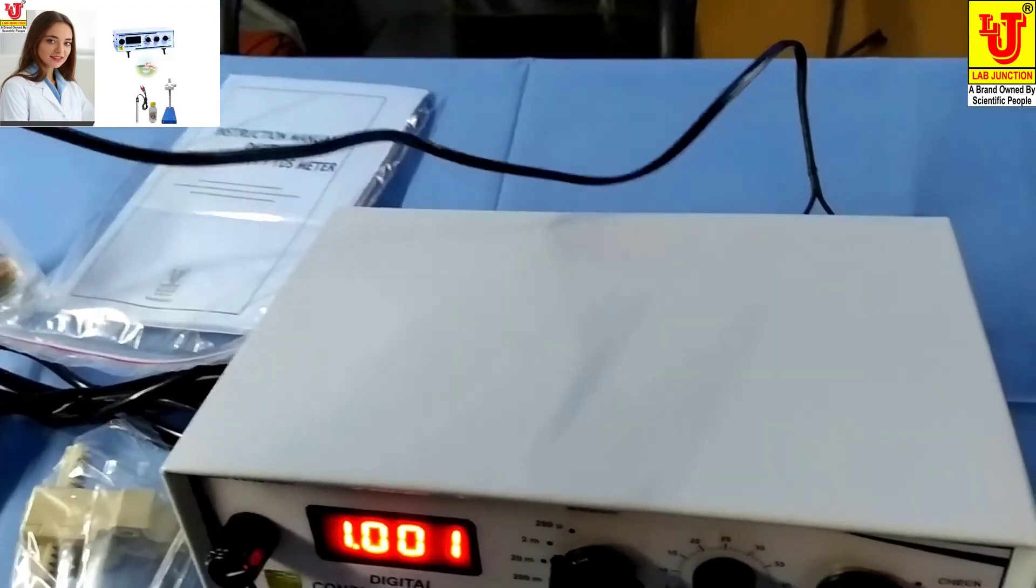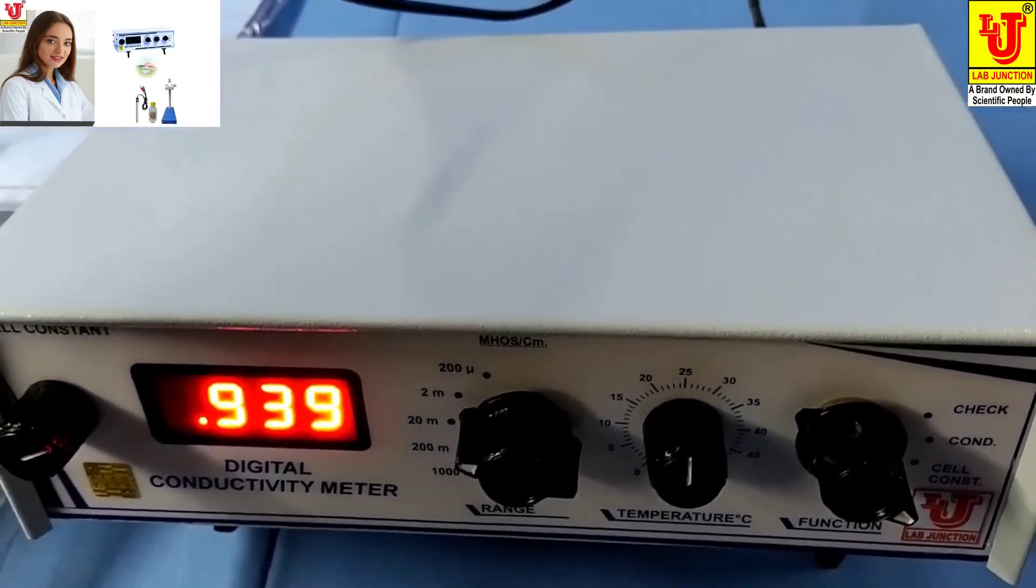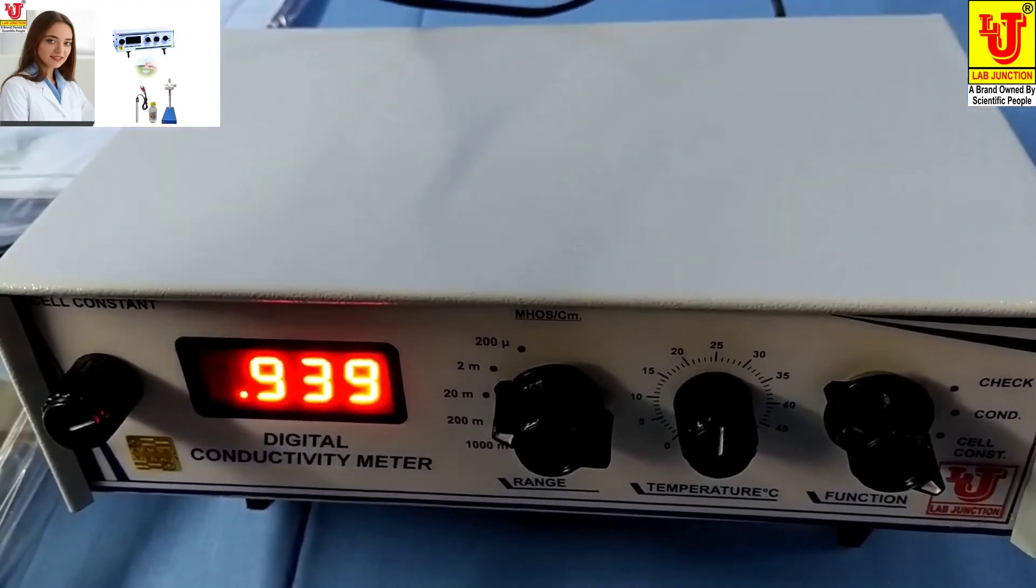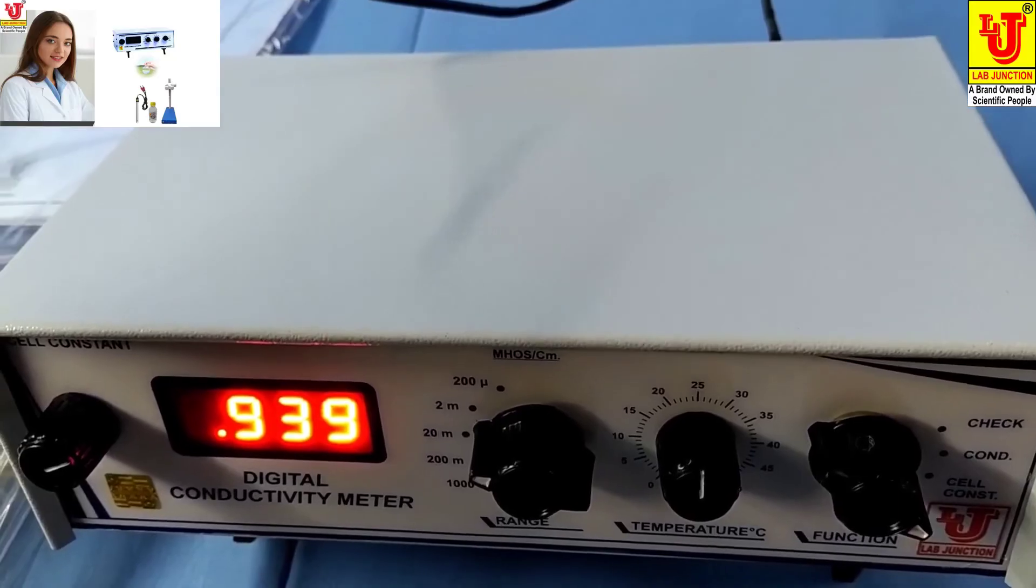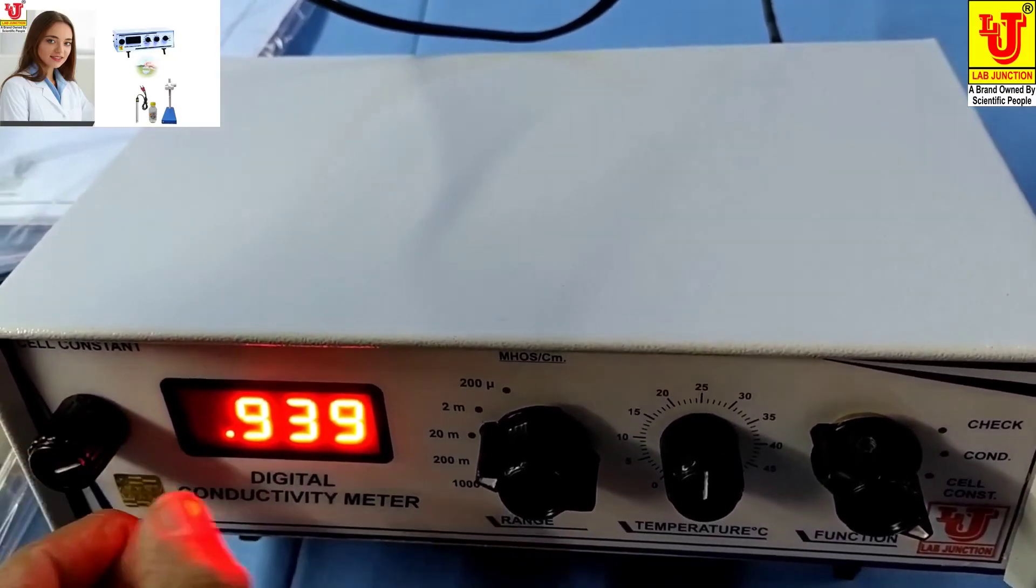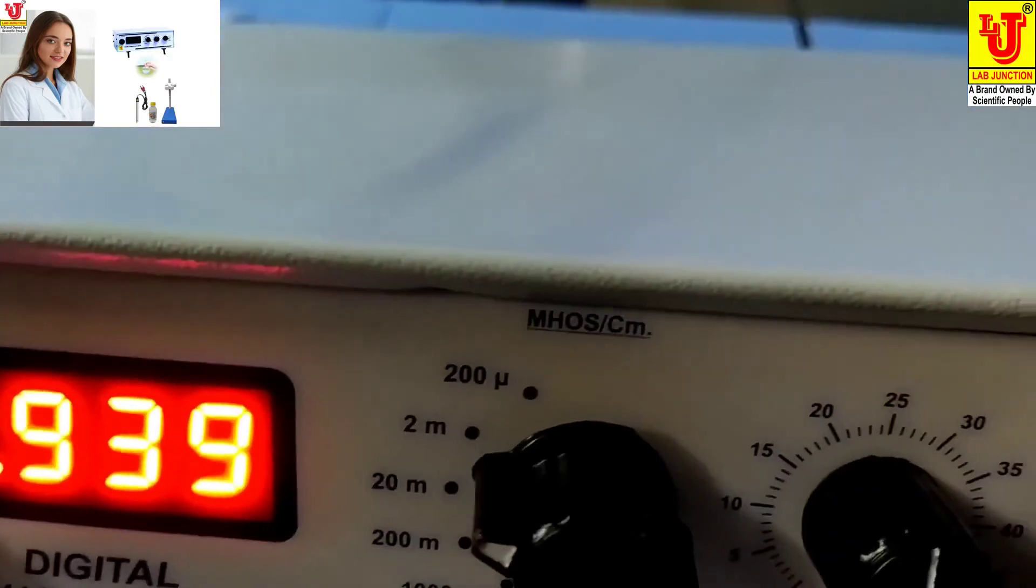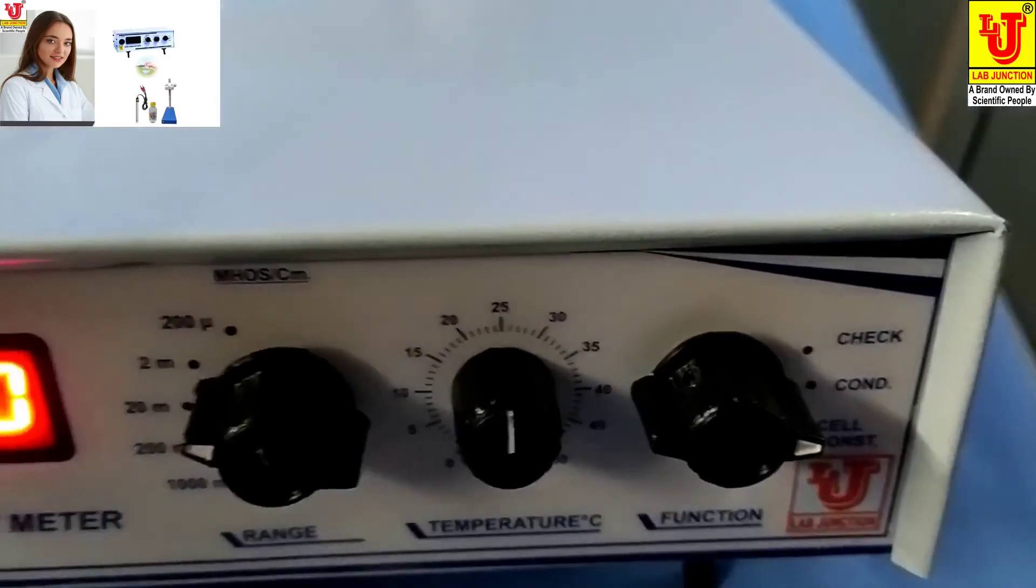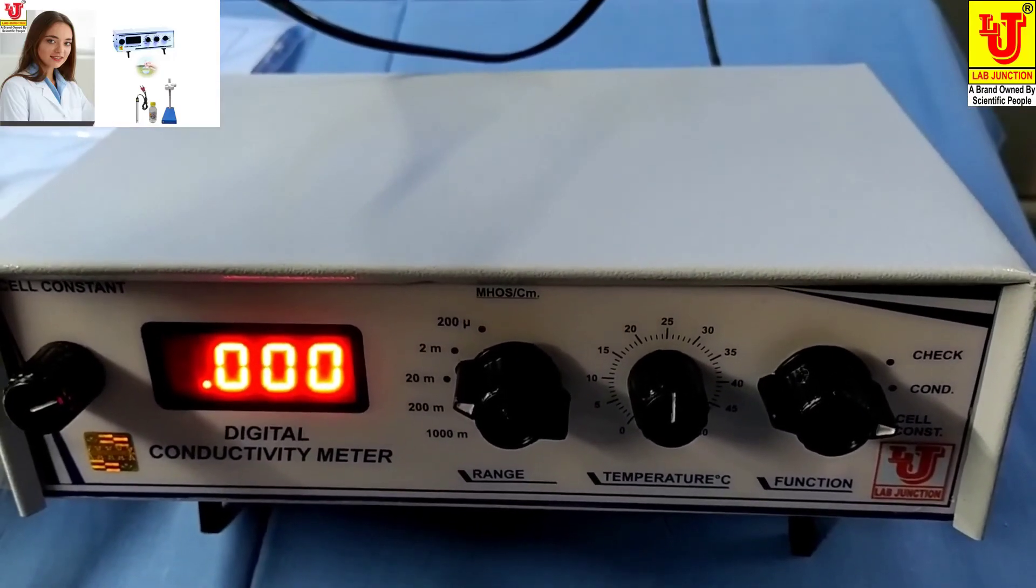Then go directly to cell constant. You have noted 0.939 in your notebook, so insert the same value using the cell constant knob and go to conductivity. Again, your digital conductivity meter is ready for use.